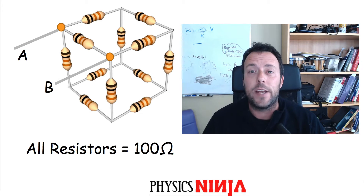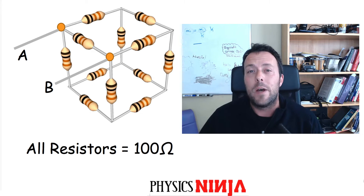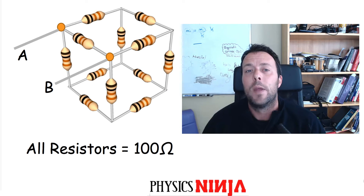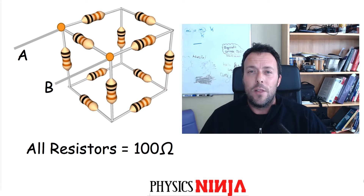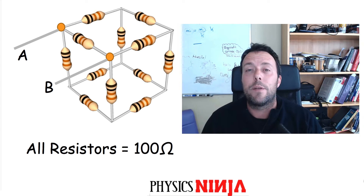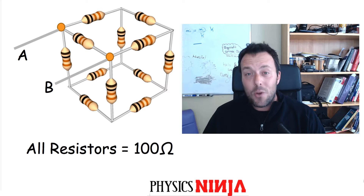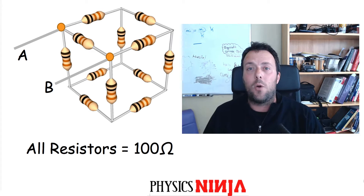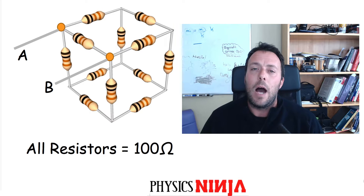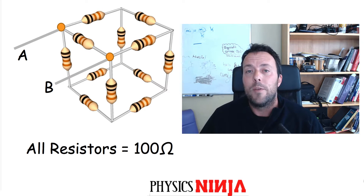This time I'm going to look at the equivalent resistance across the edge of the cube. I previously did a similar video where I looked at the equivalent resistance across the cube diagonals — I'll link that in the description. I have 12 identical resistors placed in a cube, and we're going to exploit the symmetry of the problem to make the calculation easy. I'm going to assume that all the resistors are 100 ohms.